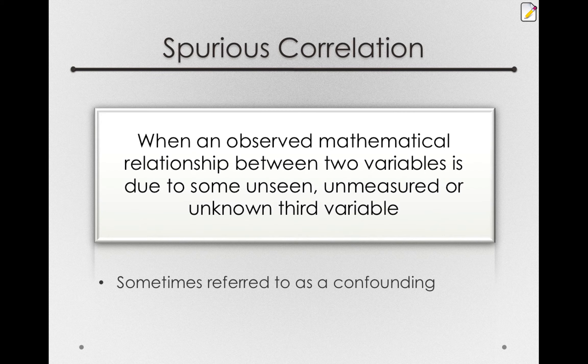Sometimes, especially in the context of an experiment, we refer to this type of spurious correlation as confounding.